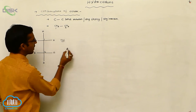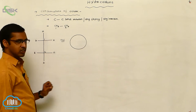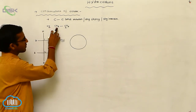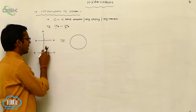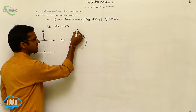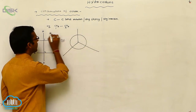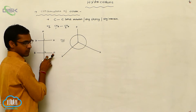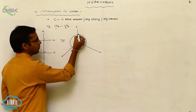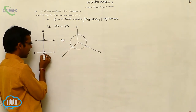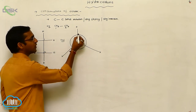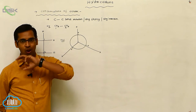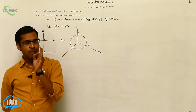This Fischer projection formula is now converted to Newman projection formula. In the Newman projection formula, you first draw a circle. From the observer, this is the front carbon and this is the back carbon. The front carbon is represented with three longest lines, and the back carbon substituents are represented with shortest lines.